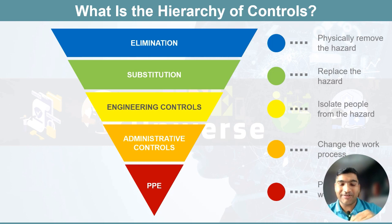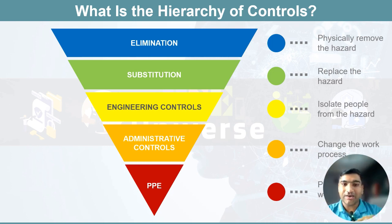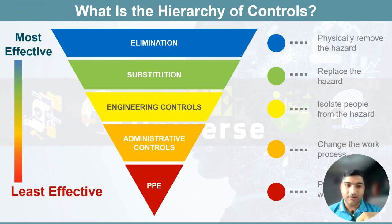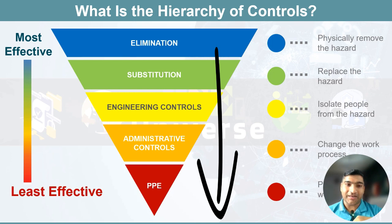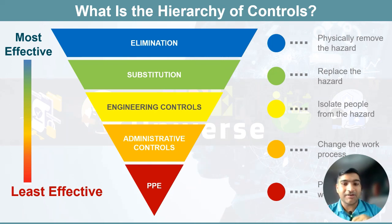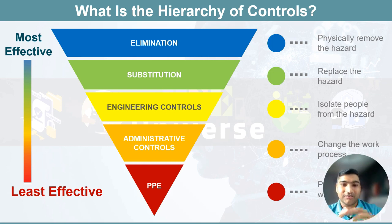Looking at the same diagram, we see elimination, substitution, engineering controls, administrative controls and PPE, with a brief description of each step on the right side. Always remember these work in hierarchy — the top one is most effective and the bottom one is least effective. So whenever we define our feasible control measures, we start with the most effective and work down to the least effective.